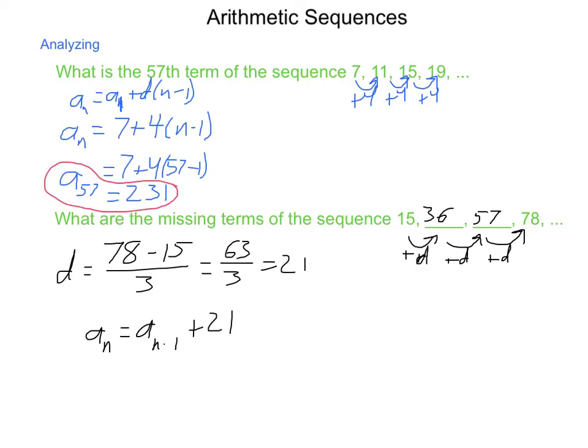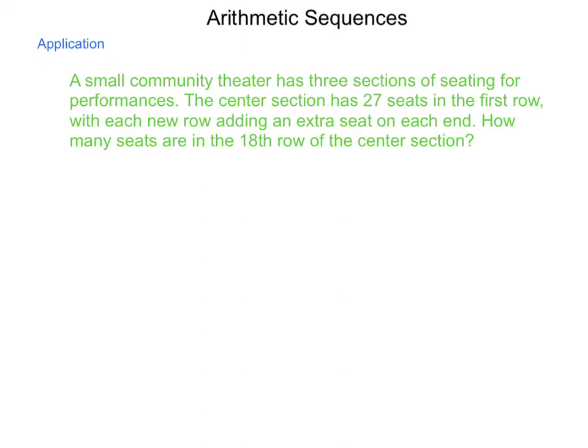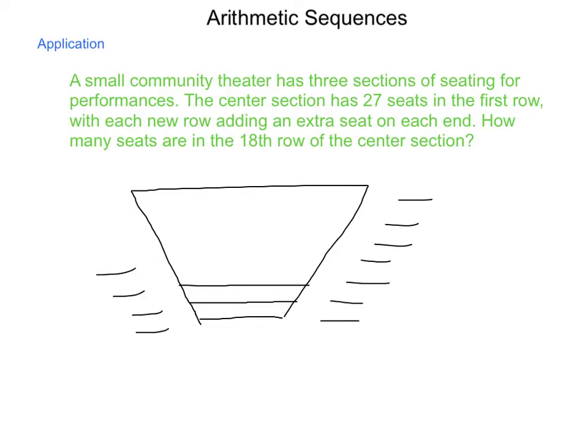Now, how can we take an arithmetic sequence and either an explicit or recursive formula and use it to apply to real life? My high school had a performance theater in it, and this is kind of based on that. A small community theater has three sections of seating for performances. You'd have a center, stage right, and stage left, with aisleways in between. The center section has 27 seats in the first row, with each new row adding an extra seat on each end. So it fans out as you move up. We have 27 seats in this row, an extra one on the left, an extra one on the right, and it will slowly build up, making a trapezoidal center section.